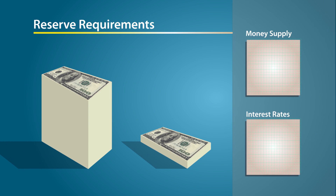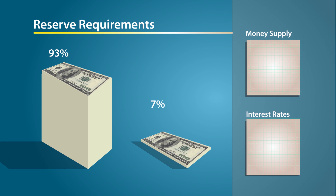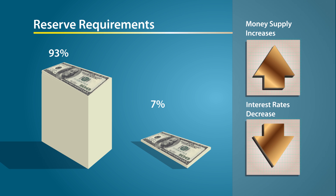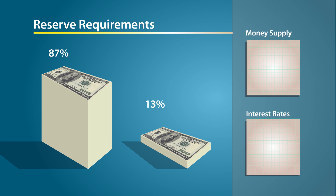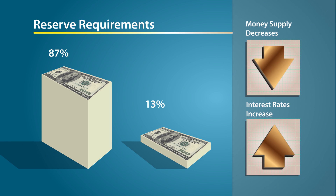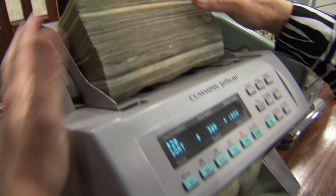Suppose the reserve requirement is 10%. That means banks are allowed to lend 90% of their deposits. If the Fed lowers the reserve requirement to 7%, the banks can lend out more money. This would very likely increase the money supply and lower interest rates. The opposite is true, too. Raising reserve requirements would likely lead to a decreased money supply and higher interest rates.